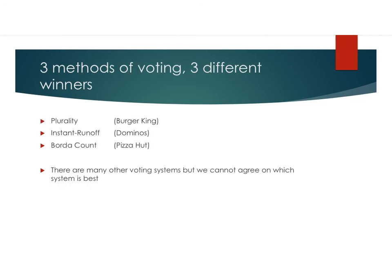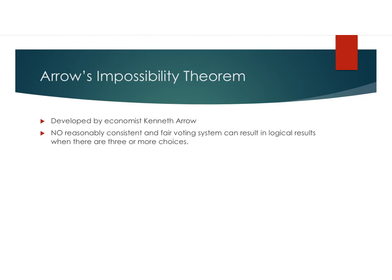So we just went over three different methods of voting, and we got three different winners. With plurality voting, Burger King won. With instant runoff, Domino's won. And with Borda count, Pizza Hut won. There are many other voting systems, but we just can't agree on which system is best. And I'll leave you with Arrow's impossibility theorem, which states that no reasonable, consistent, and fair voting system can result in logical results when there are three or more choices.